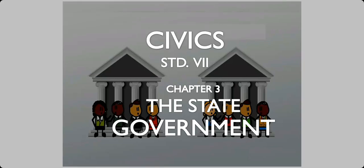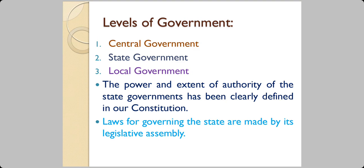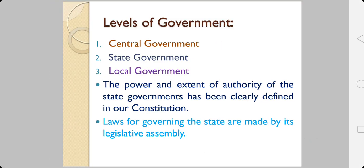Hello students, I am Samuel sir and we are in the third chapter of our civics textbook. The chapter's name is 'The State Government.' We are going to see how the state government functions. There are three levels of government in India: the central government, the state governments, and the local governments. The power and extent of authority of the state governments has been clearly defined in our Constitution.